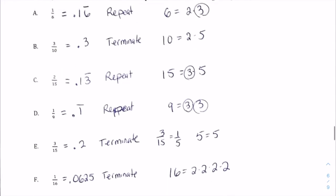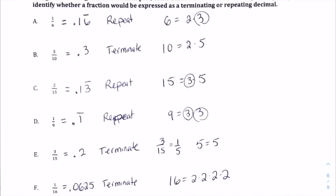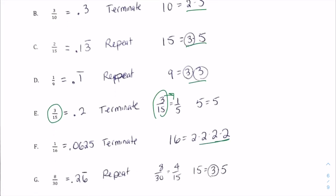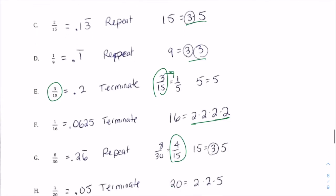So what is in common about all of these? Let's take a deeper look at the denominators. The six, the denominator of the first fraction — how does it factor? Its prime factorization is two times three. I went ahead and did the prime factorization for all of the denominators: here are two times five, here three times five, three times three. When we get to three fifteenths, it is necessary that we simplify it into one fifth. The prime factorization of five is just five. Sixteen is two times two times two times two. Eight thirtieths simplifies to four fifteenths, and that's three times five. One twentieth is two times two times five.